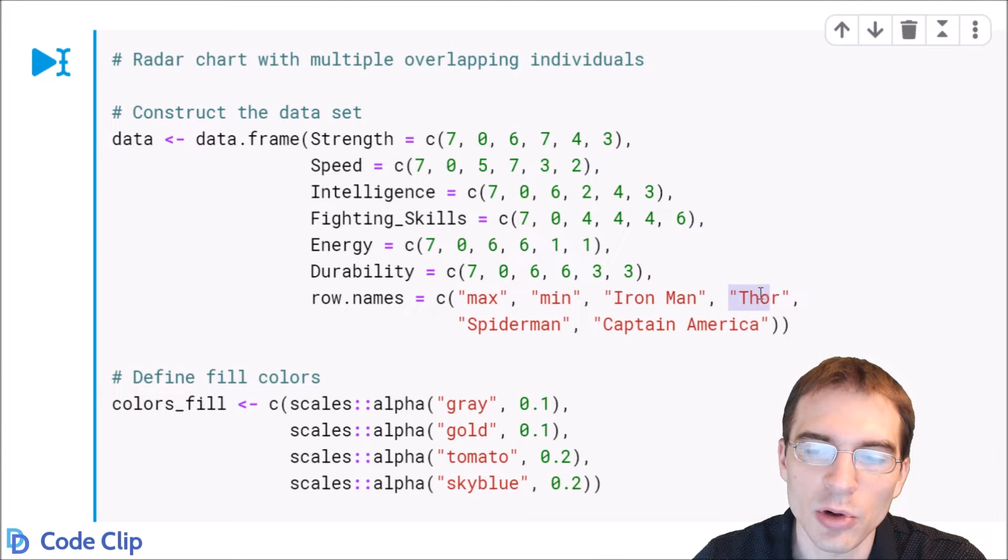So we're going to have Thor, Spider-Man, and Captain America. And then we have to include data for them in each of the columns.